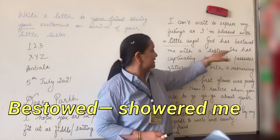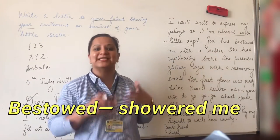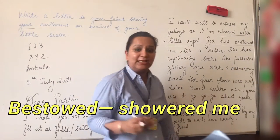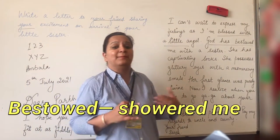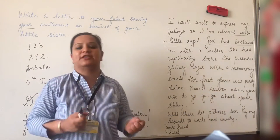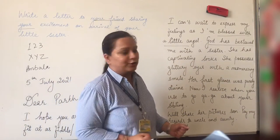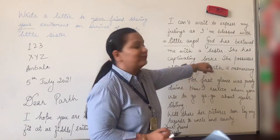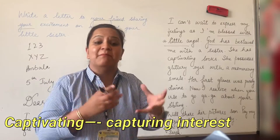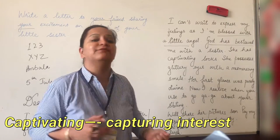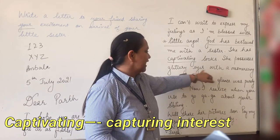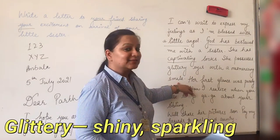Next: 'God has bestowed me with a sister.' Bestowed means 'has given' — this is also a good phrase. You can say 'I am bestowed with a beautiful family' instead of 'I am given a very beautiful family by God.' Then: 'She has captivating looks.' Captivating means capturing — something that has a magnetic influence. So 'she has captivating looks.'